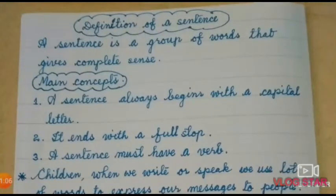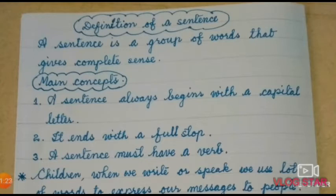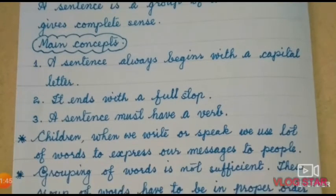A sentence is a group of words that gives complete sense. Hindi mein iska paribhasha hai: shabdhon ka sarthak samooh ko vakya kehte hain. Sarthak ka matlab hai jiska koi arth ho. Its main concepts: a sentence always begins with a capital letter, it ends with a full stop, and a sentence must have a verb. Verb means karya (action).